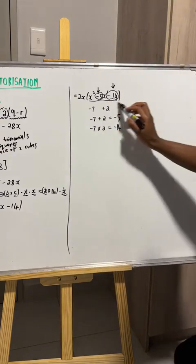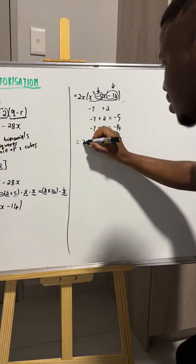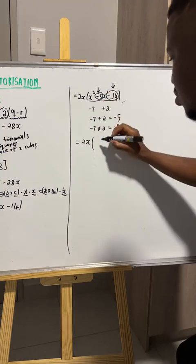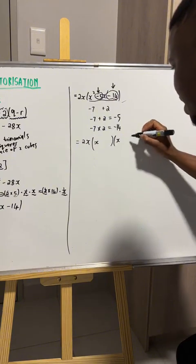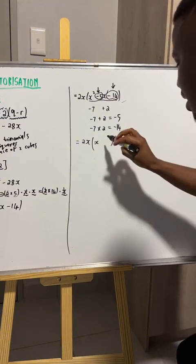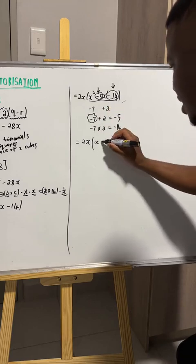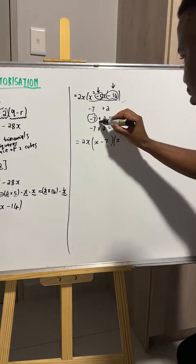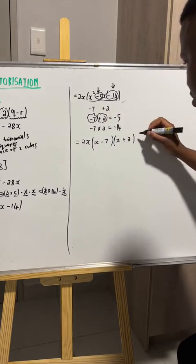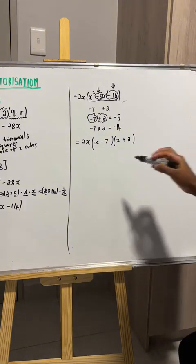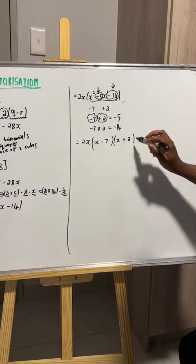So to factorize this trinomial it becomes really easy. Since we had x squared, we'll have an x in one bracket and an x in the other bracket. In one bracket we put negative 7, and in the other bracket we put positive 2. So our final factorization is 2x into (x minus 7) into (x plus 2).